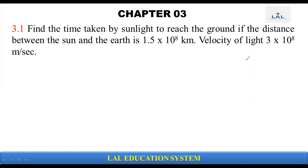We have the earth and this is the sun. The distance between sun and earth is equal to 1.5 × 10^8 km.